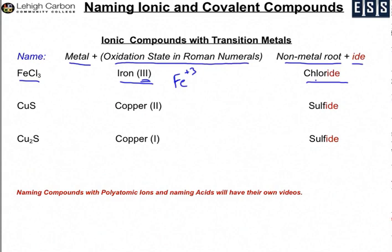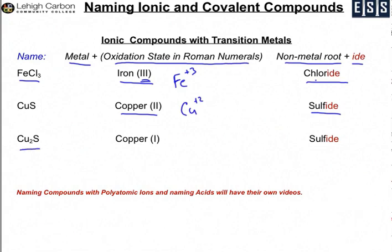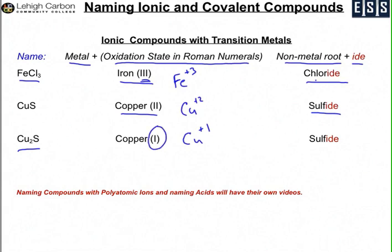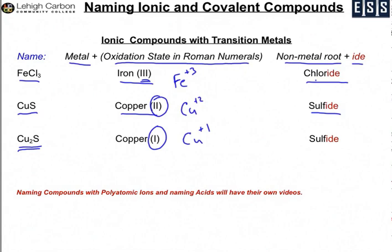The next example is CuS — copper(II) sulfide — where copper's oxidation state is plus two. In the following example, Cu2S, the oxidation state of copper is plus one, so it's copper(I) sulfide. By using the Roman numeral one or two you know whether you have CuS or Cu2S. It's important when you have a transition metal with multiple oxidation states that you introduce this Roman numeral convention.